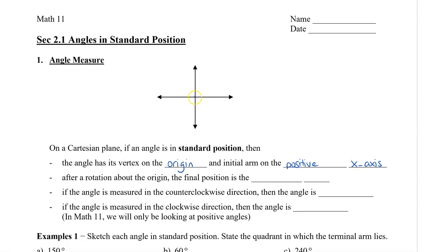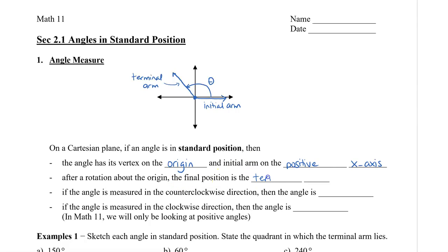We would have the vertex on the origin here at 0, 0. The initial arm starts on the x-axis, and then it rotates, and this would be the theta value or our angle. This arm here is called the terminal arm — terminal meaning that's where the angle ends. So after a rotation about the origin, the final position is called the terminal arm.